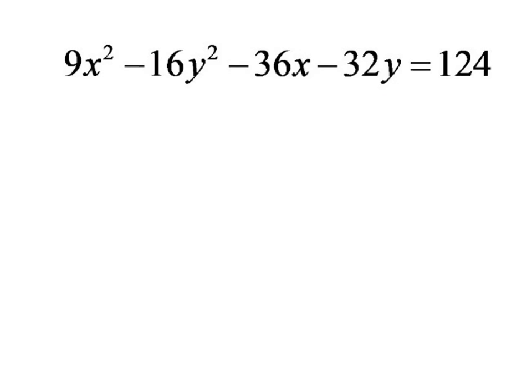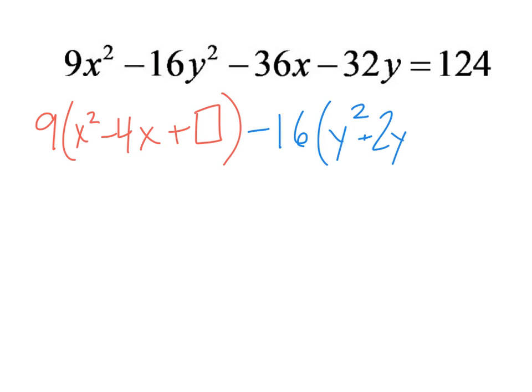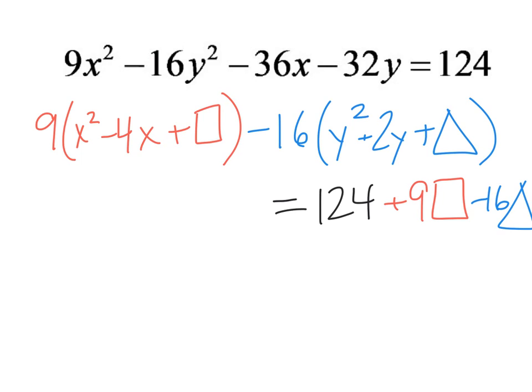If I factor out the 9, I like to add a box. And then I can factor out a negative 16 from the y squared. That becomes a positive 2y, plus I use a triangle so that I remember to do something different. And this is going to equal 124 plus, don't forget, it's not just plus a box, it's plus 9 times the box. And then it's minus 16 times the triangle.